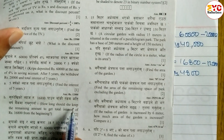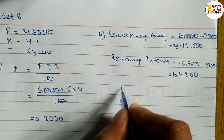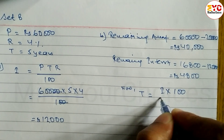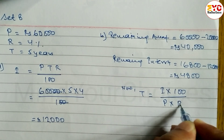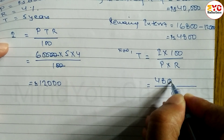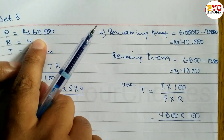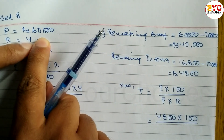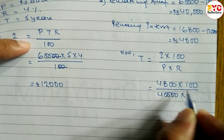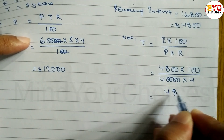Now we need to find the time. Using the formula: Time = (I × 100) divided by (P × R). Here, I is the remaining interest of 4,800, multiplied by 100, divided by P, which is the remaining amount of 40,000, and R is 4%.